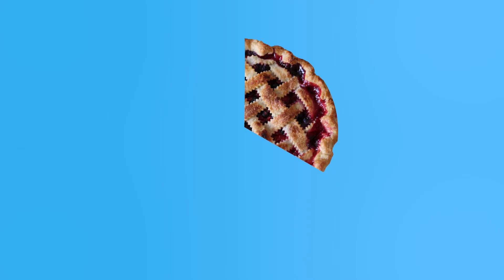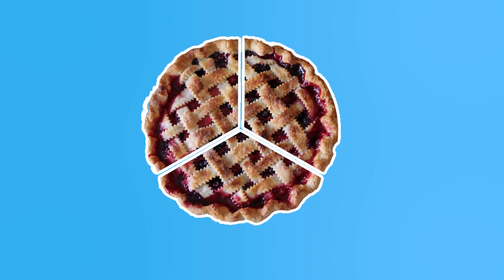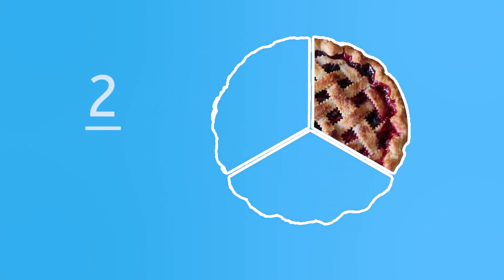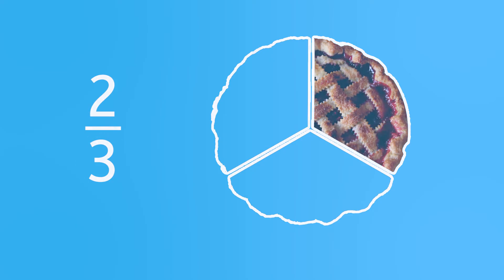What fraction of this pie has been eaten? Let's see. There are three equal pieces, and two are eaten. So we write the fraction like this — two as the numerator and three as the denominator. When you read a fraction with a three at the bottom, we call it thirds. In this case, two-thirds of the pie is gone.